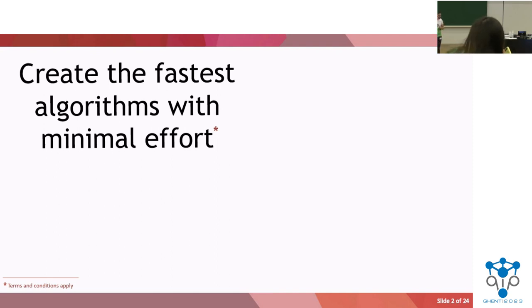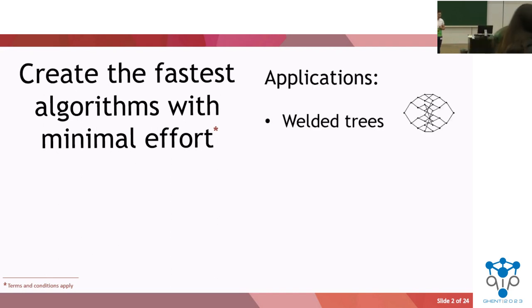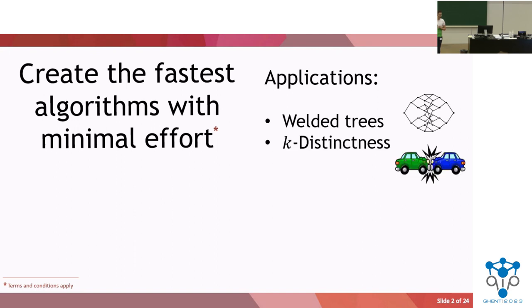We apply this to two applications. The first one being the welded trees problem, and the second one being the k-distinctness problem, where you're looking for k collisions. Once we get to these applications, I will explain them and show you why you should care about them. But first, we will start with the main ingredient of a recipe, namely random walks.